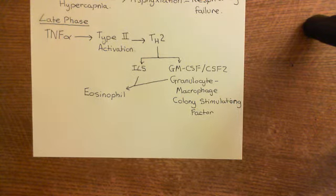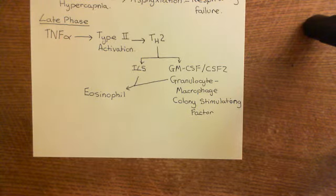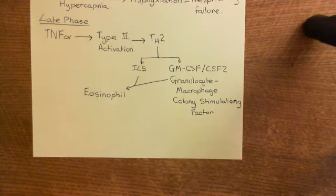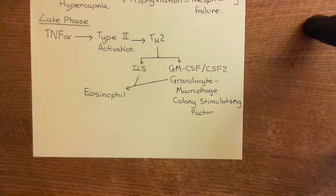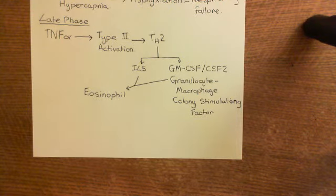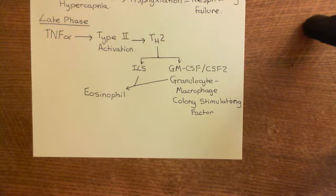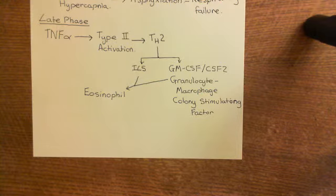Eosinophils come in and release horrendous cytotoxic proteins onto the surface of parasitic worms, killing the worm's cells. They are called eosinophils because they stain extremely well with the dye eosin — a red dye — so they appear bright red when stained.